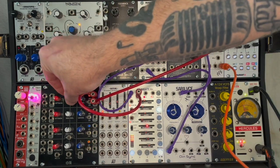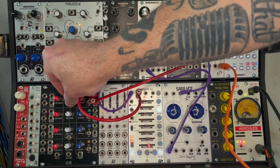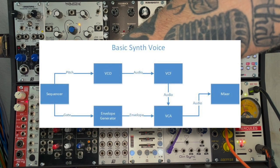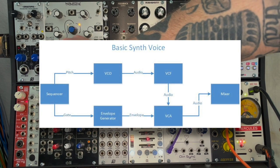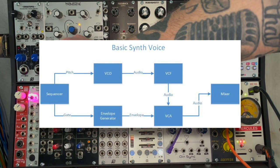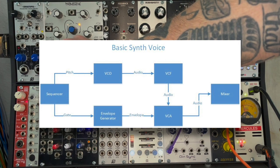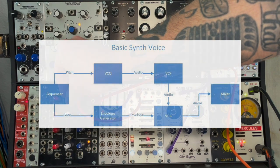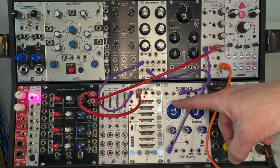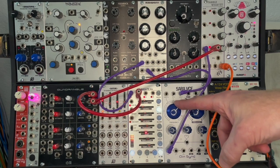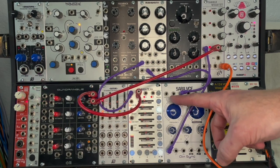And since I have an envelope generator now, I can change the length and make the notes tie together, or I can make them really, really short, or somewhere in the middle. In addition, I've got the filter here, so I can do that basic timbre shift that you do with the filter.